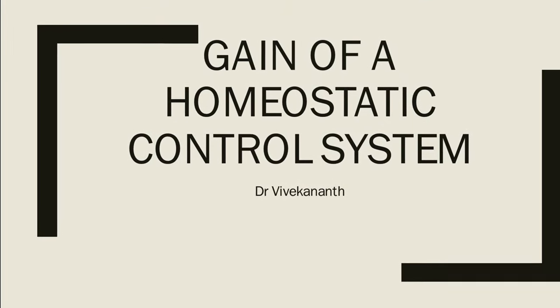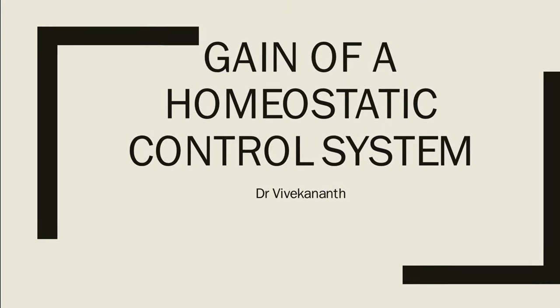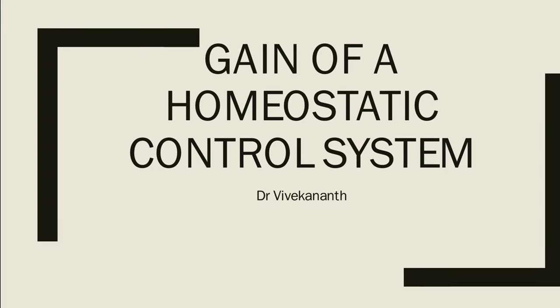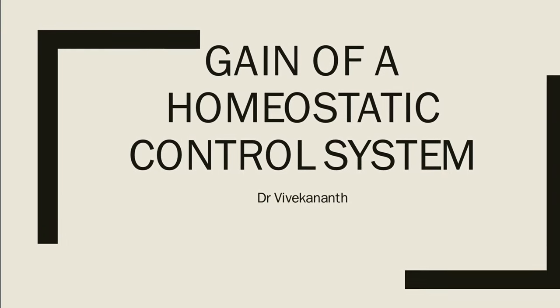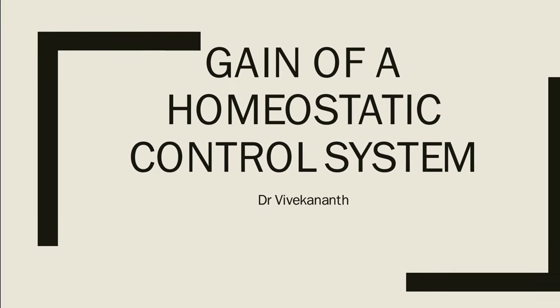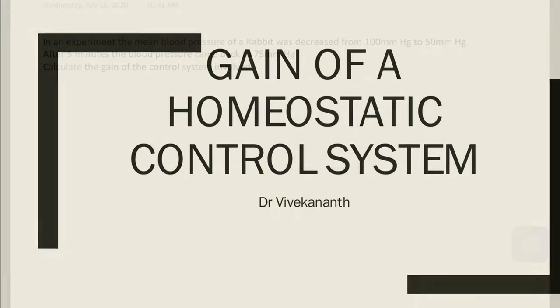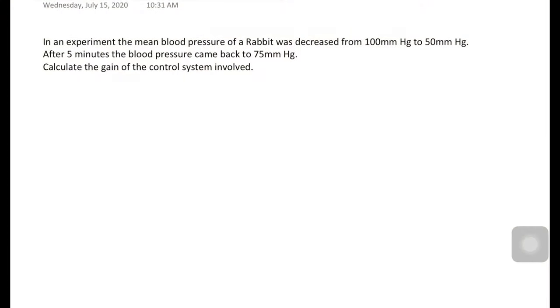Hello students. I'm going to show how to calculate negative feedback gain in a homeostatic control system. Let's solve this question: in an experiment, the mean blood pressure of a rabbit was decreased from 100 millimeters of mercury to 50 millimeters of mercury.